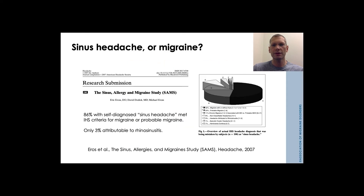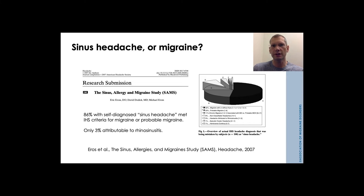In 2007, there was a study called the SAM Study — Sinus Allergy and Migraine Study — which looked at the reasons behind a diagnosis of sinus headache. It surveyed patients and healthcare providers including allergists, immunologists, otolaryngologists, and neurologists about why patients felt they had sinus headache. Almost 9 out of 10 patients with self-diagnosed sinus headache met criteria for migraine or probable migraine, whereas only 3% of the headaches were attributable to inflammatory rhinosinusitis by current criteria. Many patients are likely misattributing sinus infection or sinus headache when the underlying condition is actually migraine.